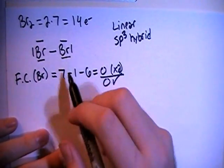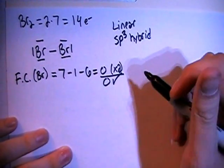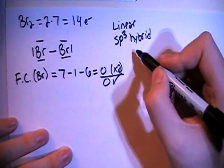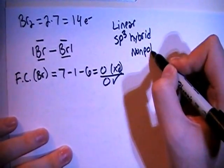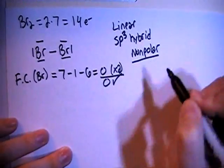And because these are both the same kind of atom, they're both bromines, their polarities will cancel each other out, making this a non-polar compound.